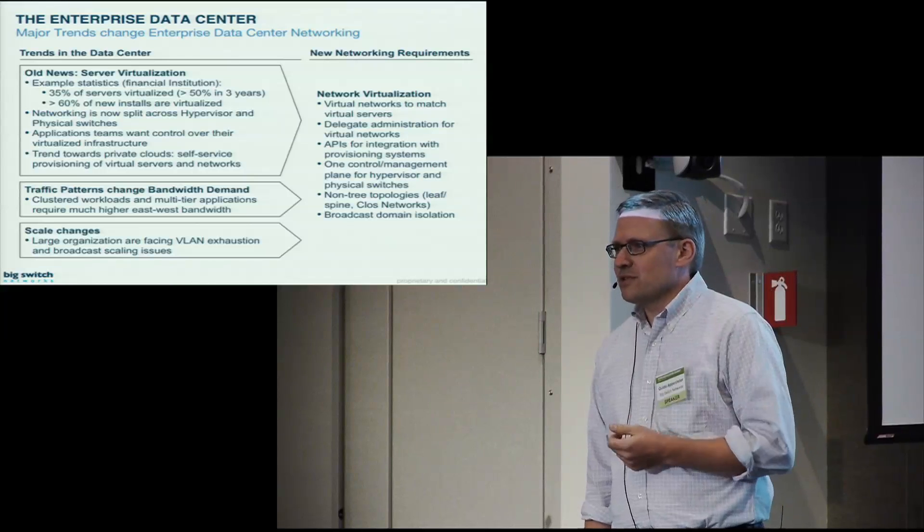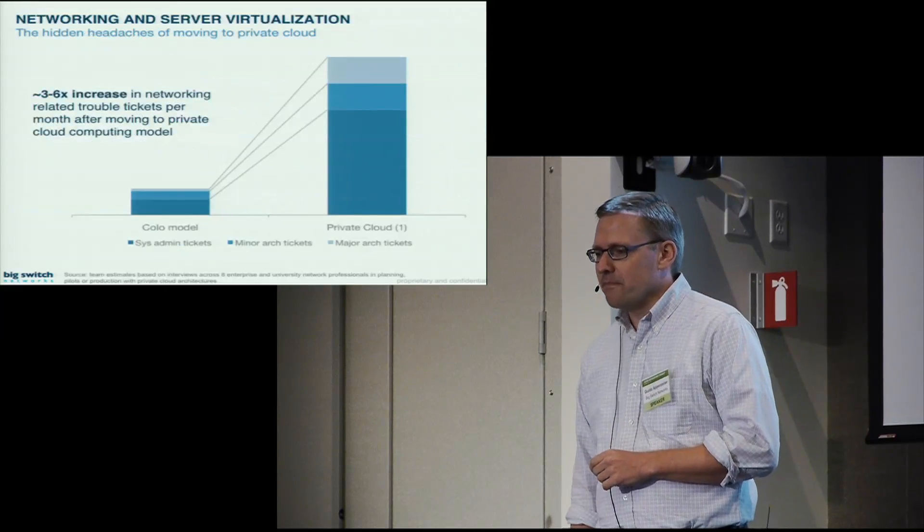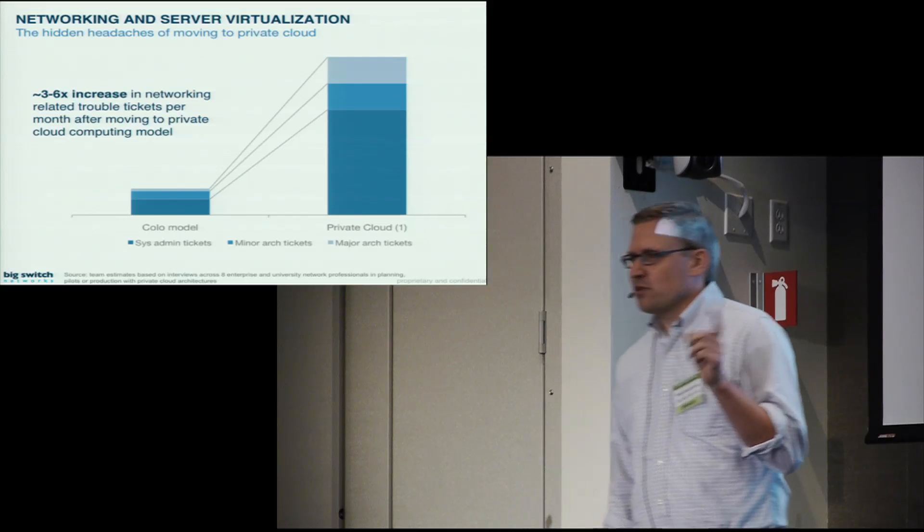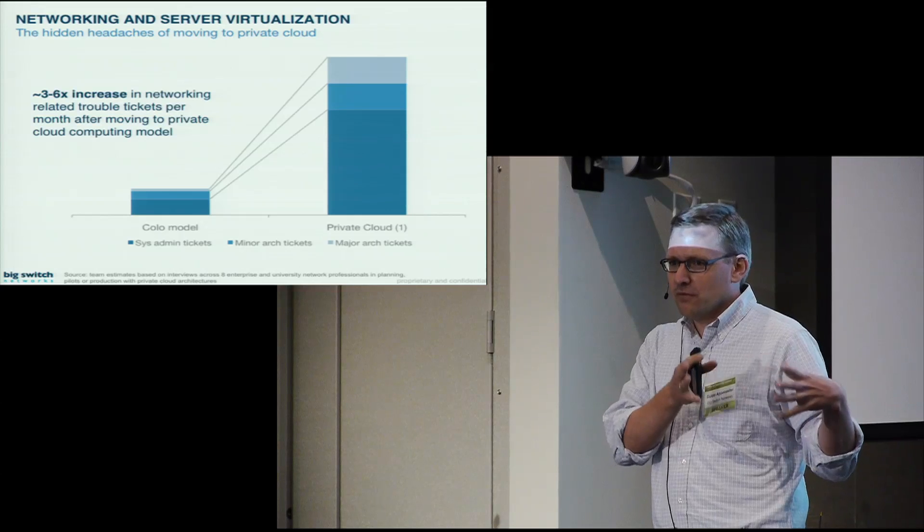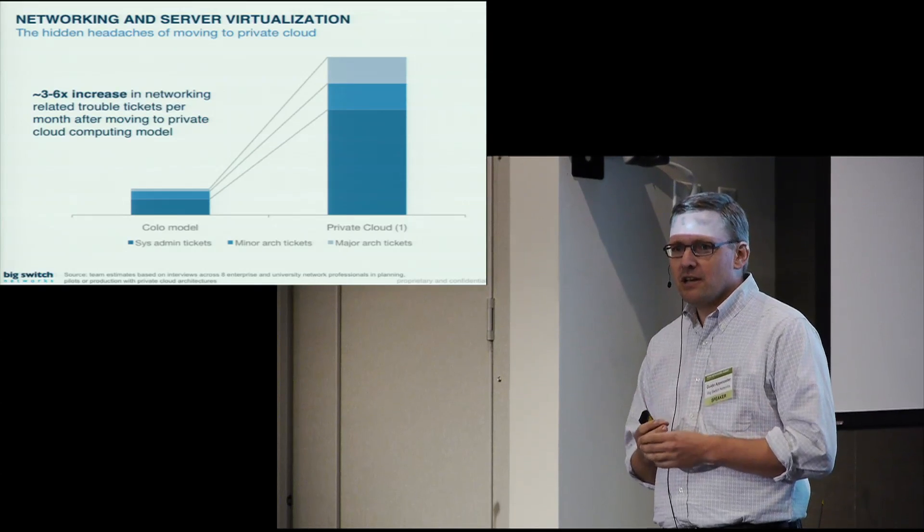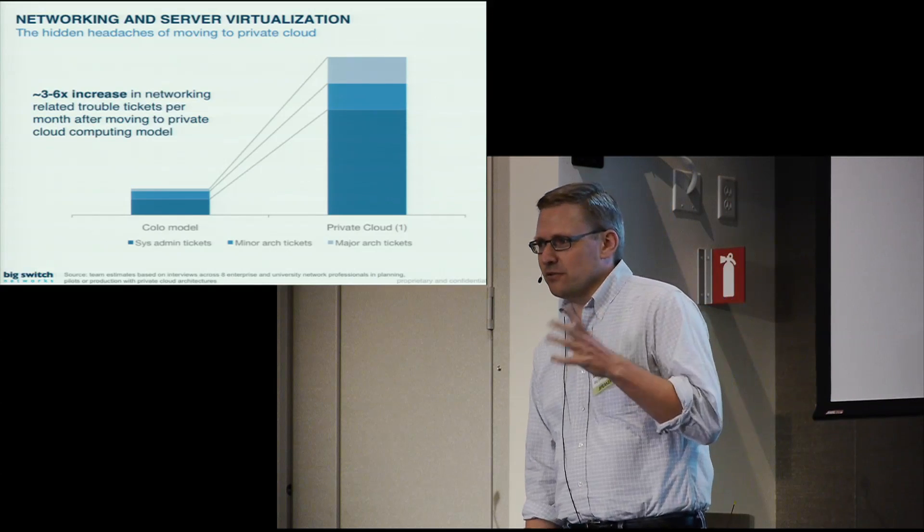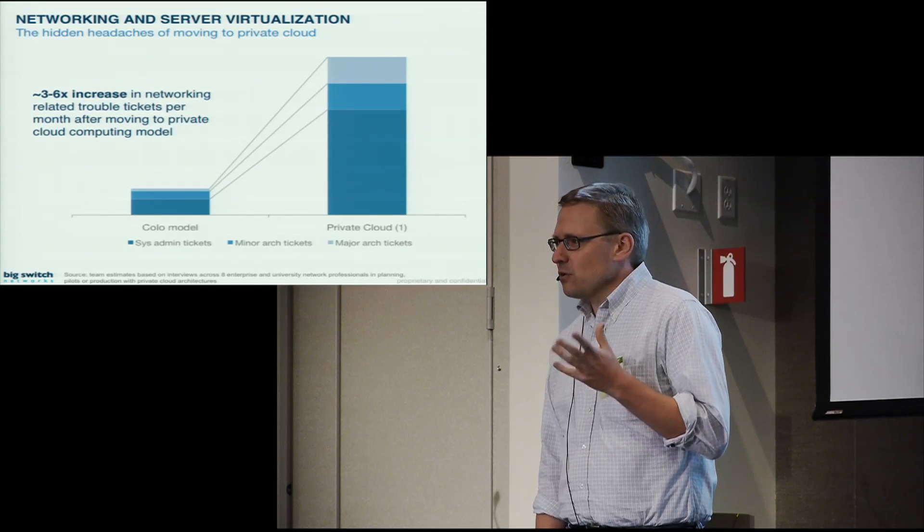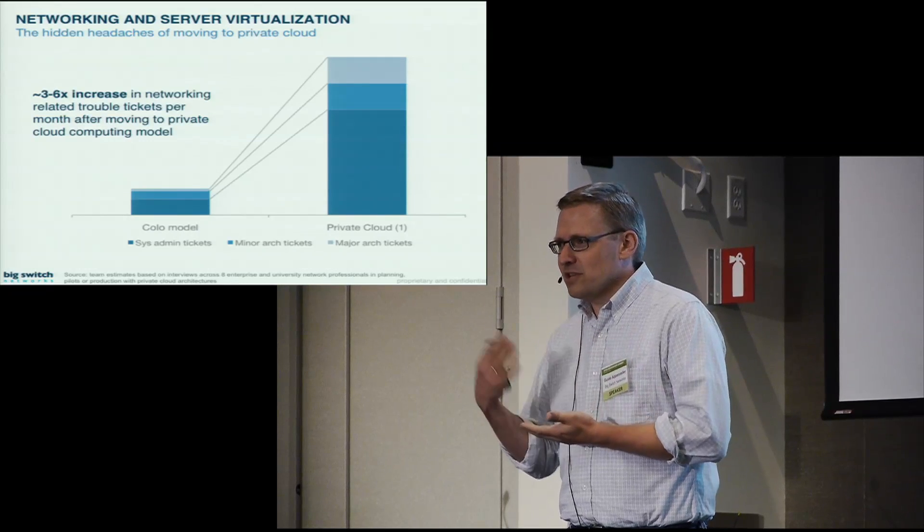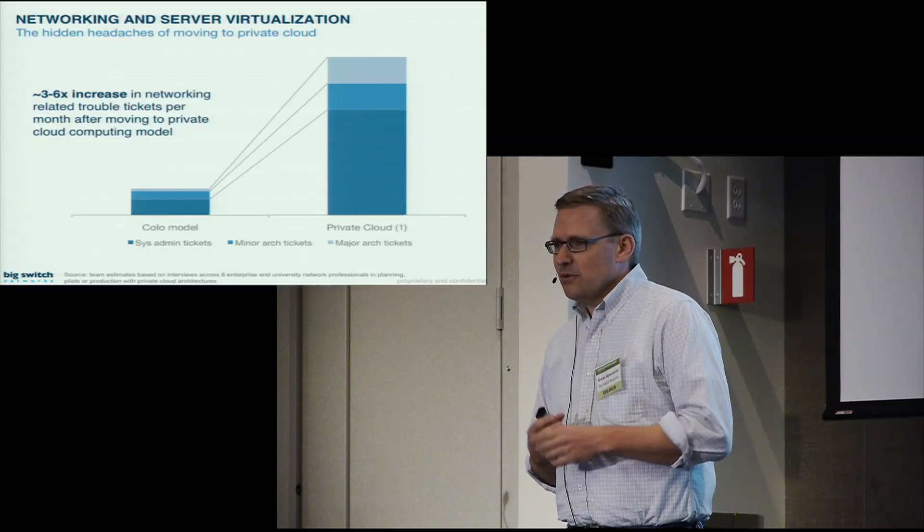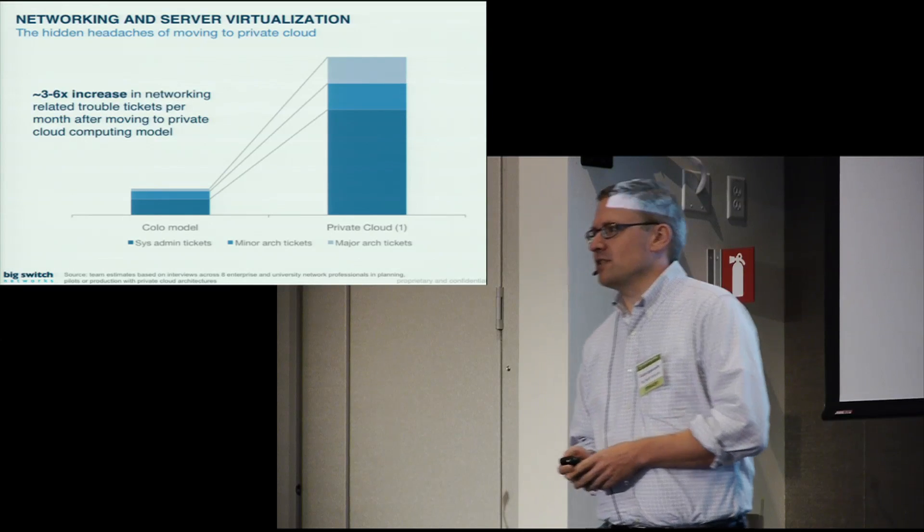You might be wondering, do I really need this? What happens if I just ignore this and try to do things the way I've been doing it so far? We did a mini-survey of a couple of our customers and asked them, if you're going from a classical colo model with physical servers to a private cloud with complete self-provisioning, what's the effect on the number of change requests that come into your networking department if you don't change anything? The answer is it goes up by a fairly large factor. If you're trying to scale this, the number of VMs being started up in the enterprise is going up and up. You either have to hire more network administrators or do something differently. That's where network virtualization comes in.